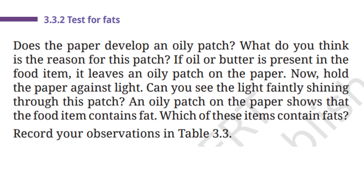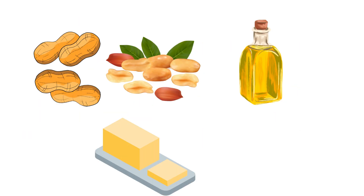An oily patch on the paper shows that the food item contains fat. Which of these items contain fats? Record your observations in Table 3.3. So to check if a food contains fat, place it on a piece of paper and press gently. If the paper shows a greasy or oily patch that lets light pass through, it means fat is present. For example, butter and peanuts leave oily patches because they contain fat.